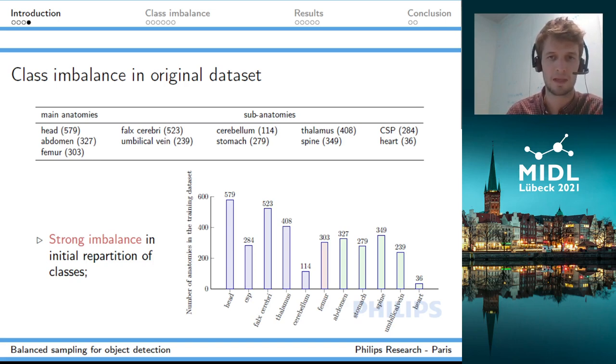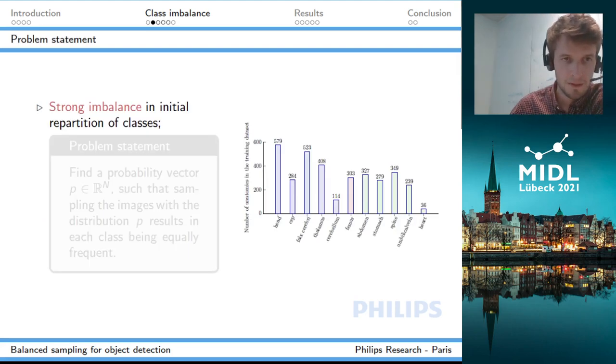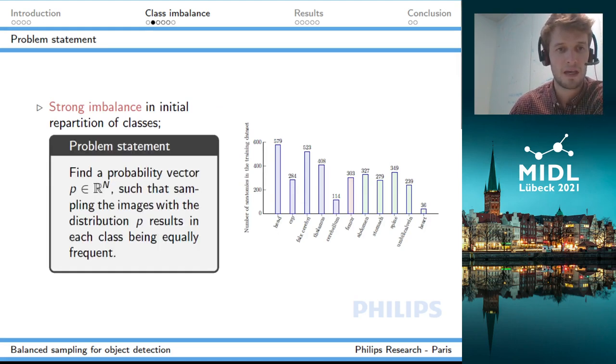As I said, we have strong imbalance in the initial distribution of classes. If I have N images in the dataset, what I want to do is find a probability vector p with N components such that if I sample my N images with this distribution p, I get each class to be equally frequent. There's no guarantee it's possible to find such a vector p, but this is what I would like to solve.